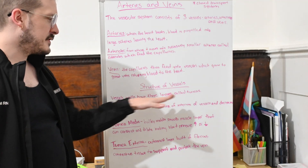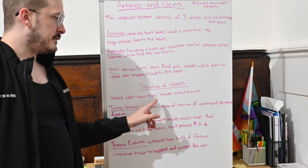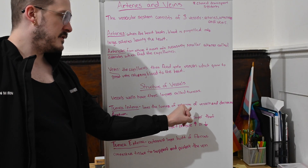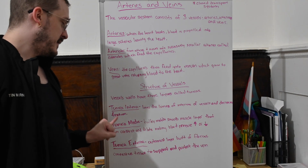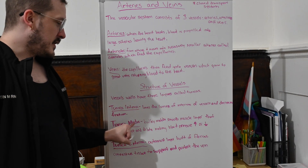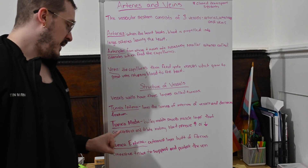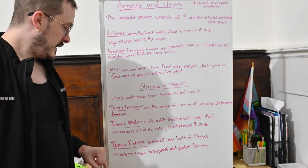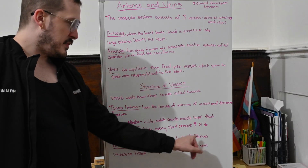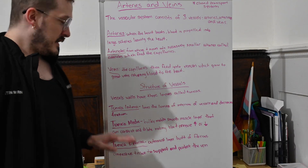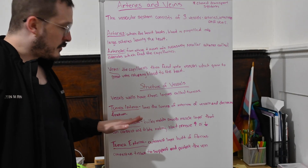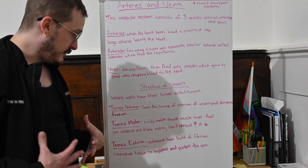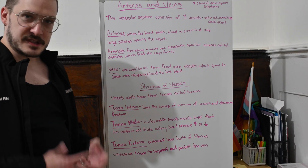Vessel walls have three layers called tunicas. The tunica intima lines the lumen of the interior vessels and decreases friction. The tunica media is the bulky middle smooth muscle layer that can constrict and dilate, thereby creating and regulating blood pressure. You can remember each layer by the word after 'tunica': intima means close/inner, media means middle, and externa means outside or external.